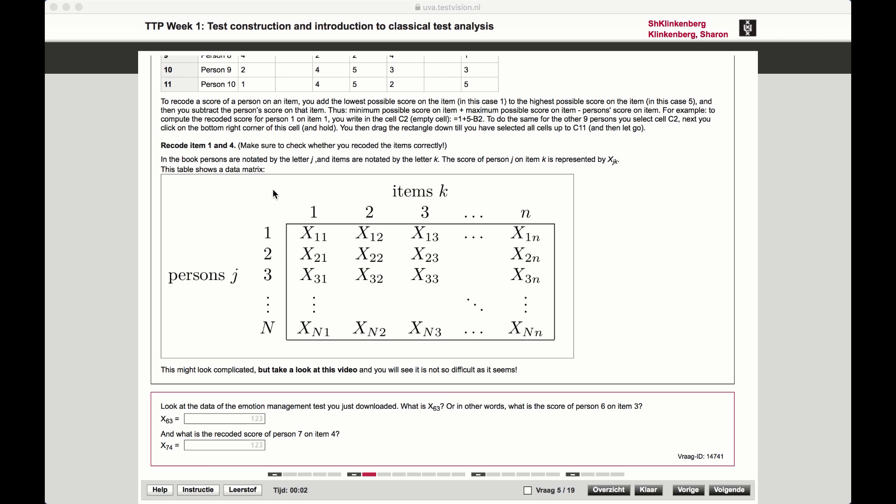So if I want to see the score for person 1 on the first item, that will be X11. So the XJ value will be 1, and the XK value will also be 1.